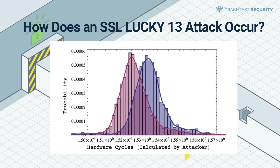In its most basic version, a Lucky 13 attack requires about 2^23 TLS sessions to collect a whole block of TLS encrypted plaintext. This can be reduced several times, and under the best circumstances, an attacker needs 2^13 TLS sessions to recover one plaintext byte. This is premised on the condition that the attacker is close to the target to reduce any noise and perform the timing attack.